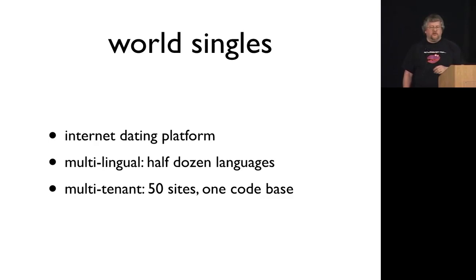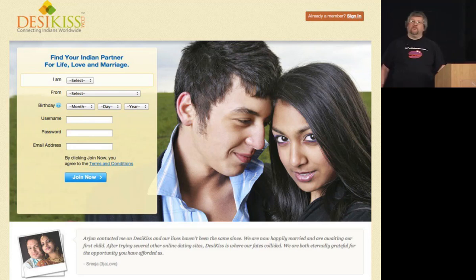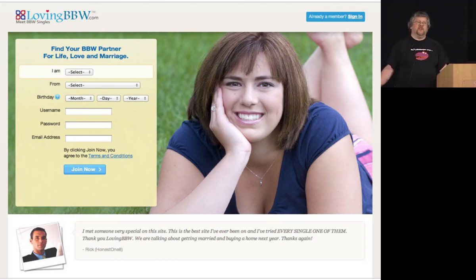We're an internet dating platform. We're multilingual — we've got about half a dozen languages live now. We have 50 sites, and technically two code bases: a legacy code base and a new code base that has Clojure in it, and we're migrating all the sites over to it. We're mostly focused on ethnic verticals, though some are more specialist interest.